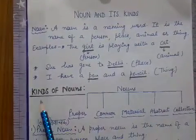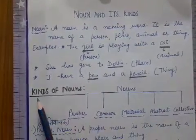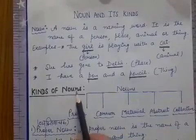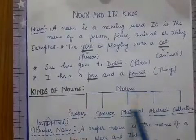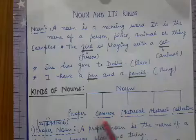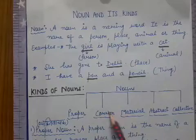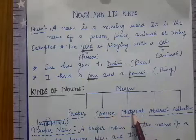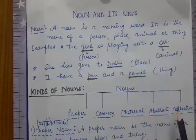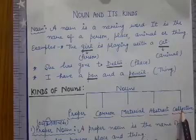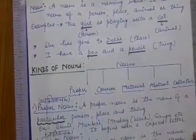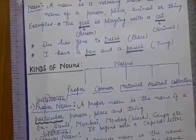Now we are going to study the kinds of nouns. Nouns are of five kinds: proper noun, common noun, material noun, abstract noun, and collective noun.